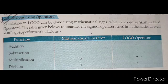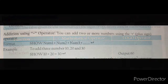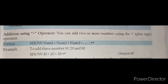Now let us see the formats of different operators. For addition using the plus operator, you can add two or more numbers. The format is: SHOW NUMBER1 + NUMBER2 + NUMBER3. Press the Enter key to execute the sum.